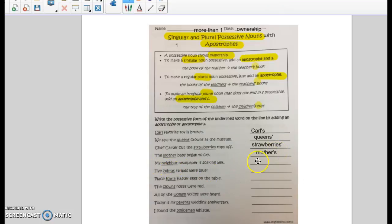My neighbor newspaper is soaking wet. Well, they're only talking about one neighbor. So you put neighbor apostrophe S. If you're talking about more than one neighbor, then it would go after the S. Five zebra stripes. It's more than one zebra. So the S goes with the base word, add the apostrophe afterwards. Five zebras.